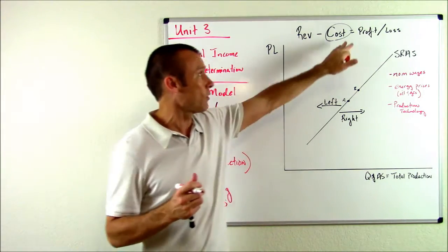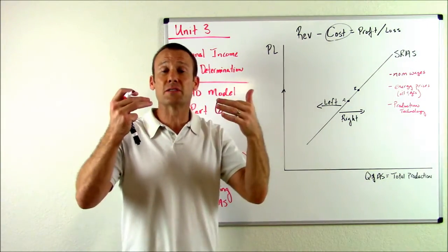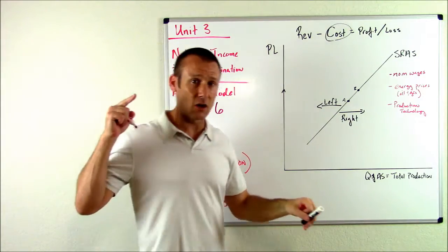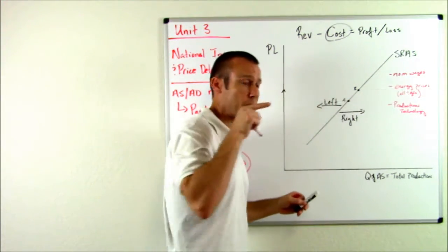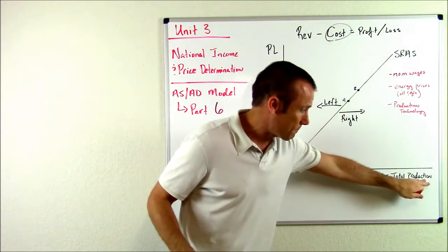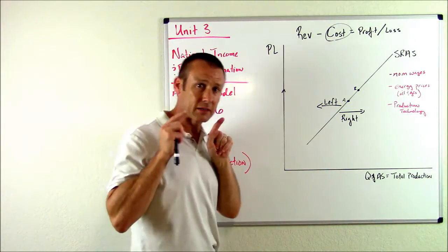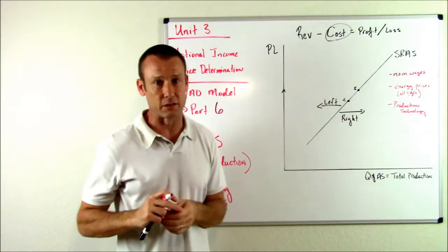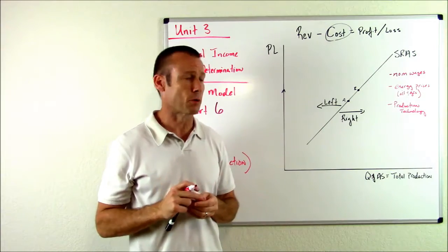When our technology improves in our economy, that's going to lower the cost of production. And things that lower the cost of production get SRAS to increase, to shift right. We're going to get more production at every single price level, more production at every single price level when we get technological progress.